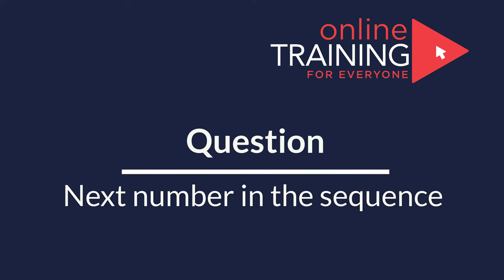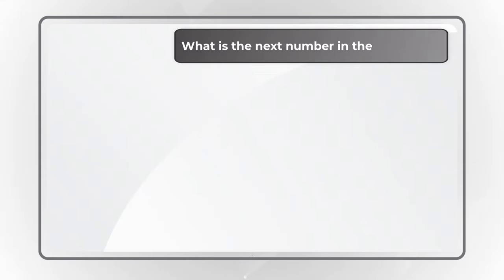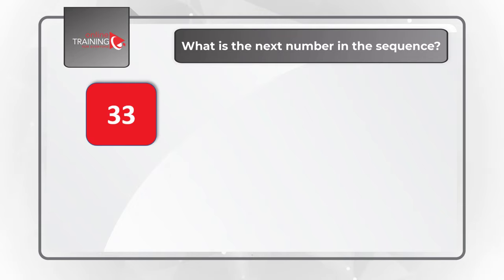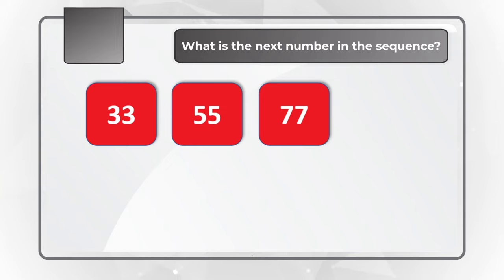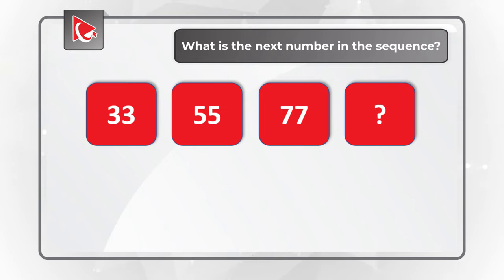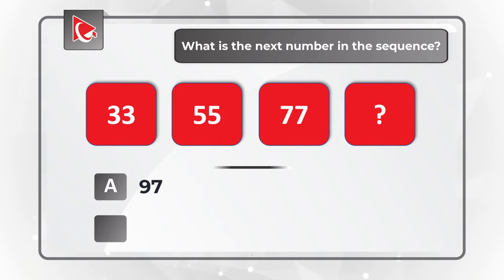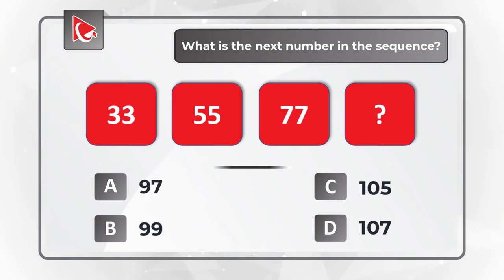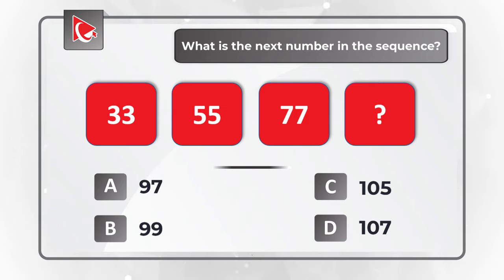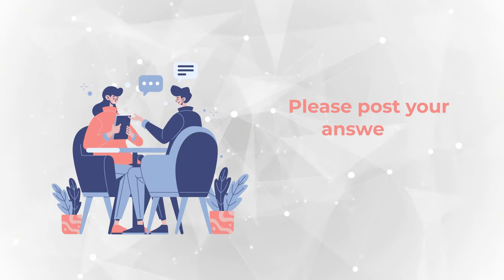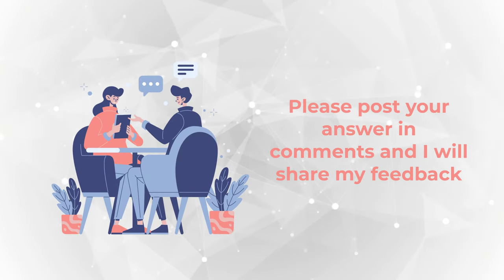Would you like to try your own skills to see how well you can solve the challenge? This is your opportunity to find the next number in the sequence. You are presented with three numbers: 33, 55, 77, and one number is missing. You have four choices: Choice A, 97; Choice B, 99; Choice C, 105; and Choice D, 107. Give yourself a little bit of time, and once you are ready, make sure to post your answer in comments. Thanks for participating and good luck!